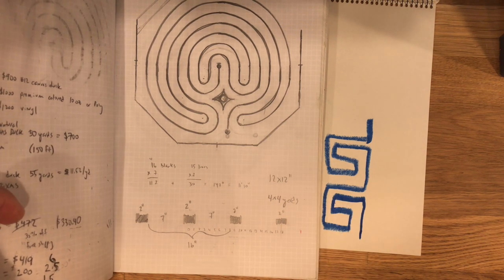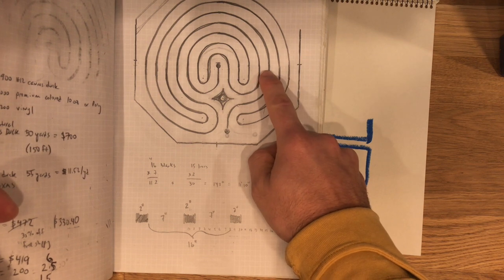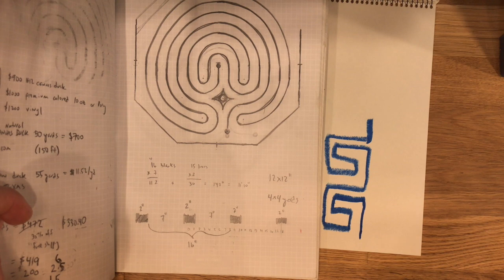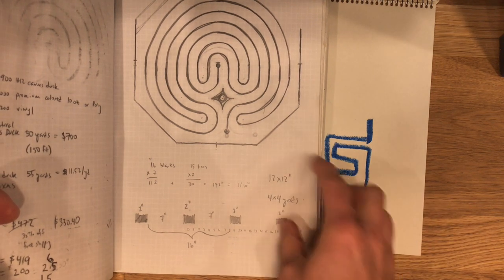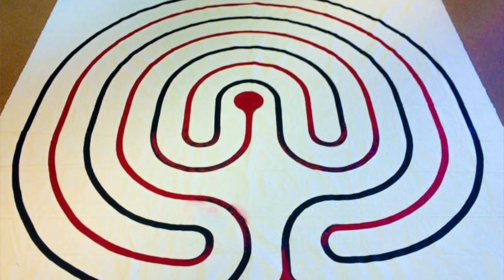Now it wouldn't be good for large groups because you are sharing your pathway with the next outer line. But it becomes a great way to make a small personal seven-circuit classical labyrinth.